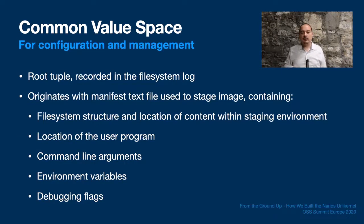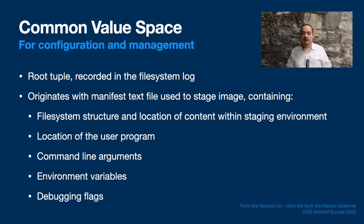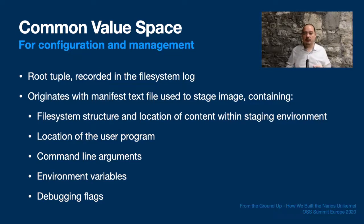Let's now move along to talking about how we approach configuration and management within Nanos. Perhaps the most interesting aspect is that we have one common space to store values used for configuration as well as revealing information about a running instance. This key-value store is created when a Nanos image is built as part of our logging extent-based file system called TFS. The system manifest, which begins life as a human-readable JSON-like text file, contains all the essential values needed to create a Nanos image: the structure of a root file system and location of files, the location of a user program and command line arguments, environment variables, and debug flags.